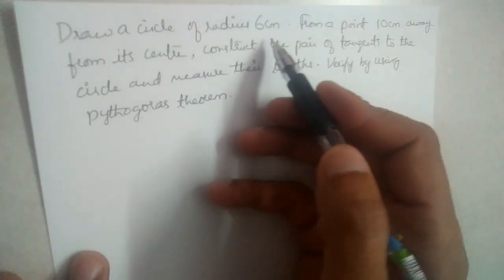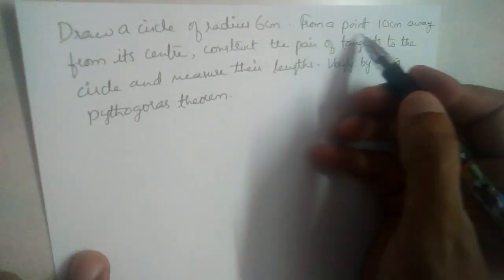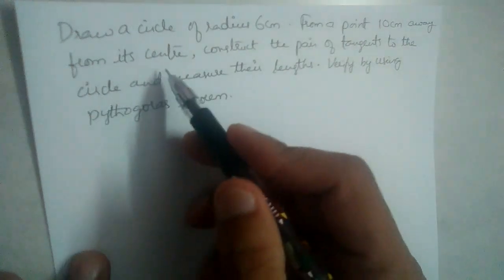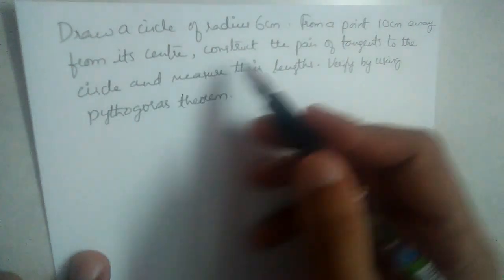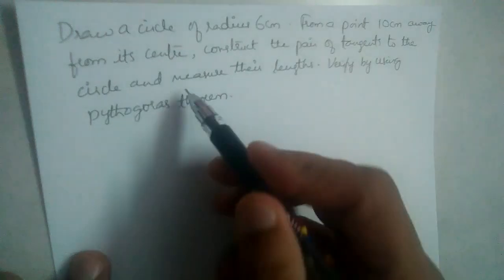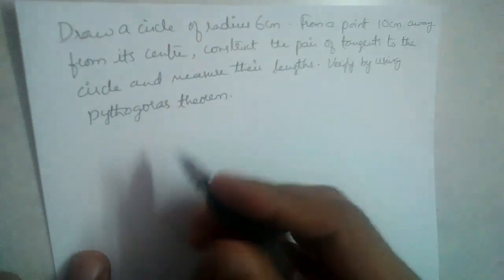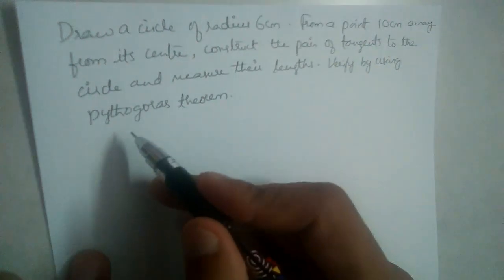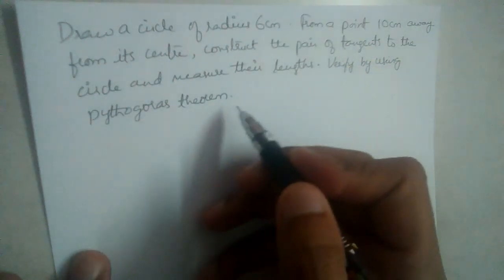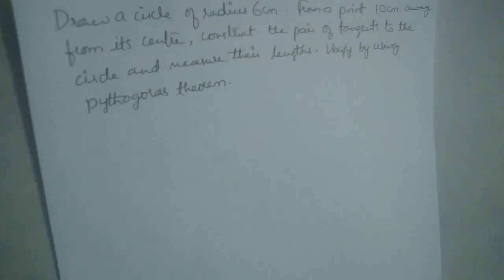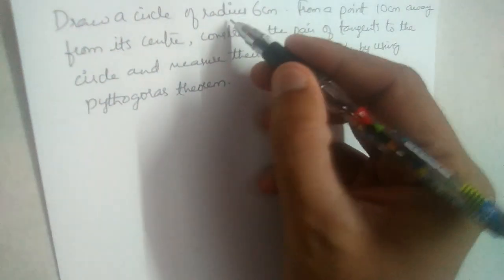Draw a circle of radius 6 centimeters. From a point 10 centimeters away from its center, construct a pair of tangents to the circle. Measure their lengths and verify using the Pythagoras theorem.